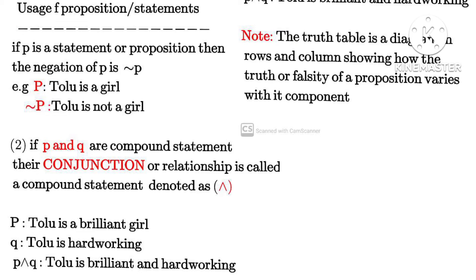Let's take negation for example. 'Tolu is a girl' — the negation, not-p, is 'Tolu is not a girl.' Now if p and q are compound statements, they form a conjunction. Conjunction is denoted with the ∧ symbol. For example: p = 'Tolu is a brilliant girl,' q = 'Tolu is hardworking.' The conjunction of the two is: 'Tolu is brilliant and hardworking.' That is a compound statement.